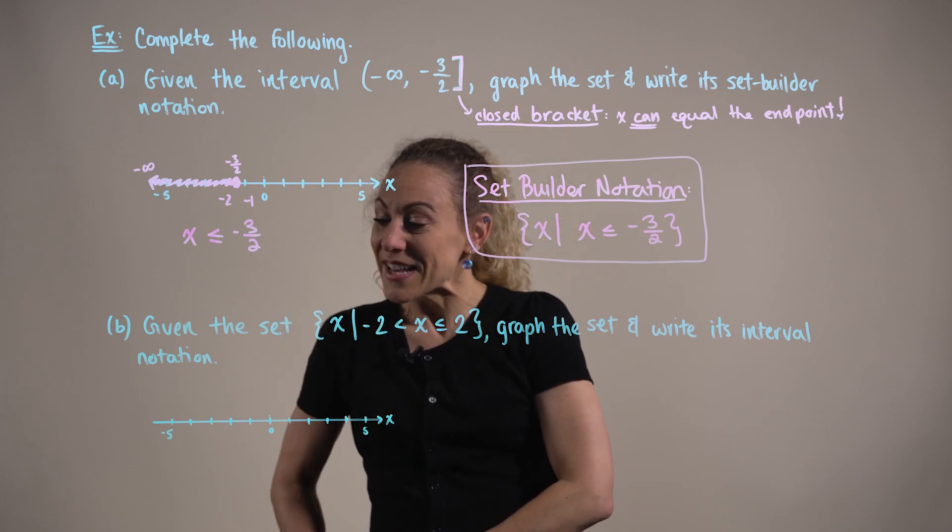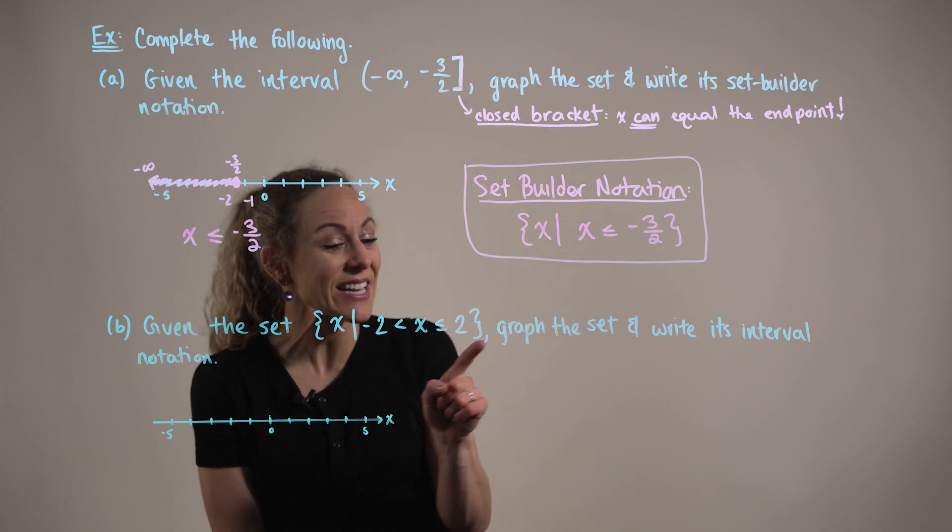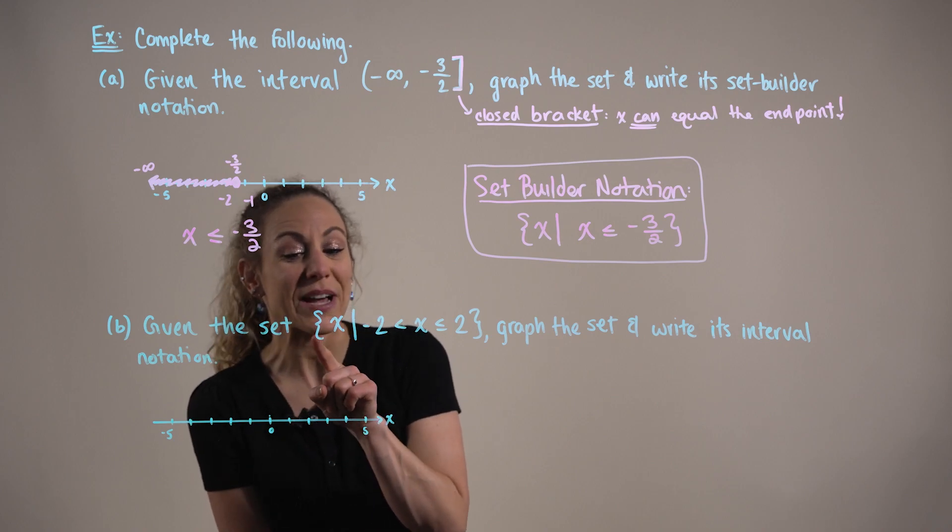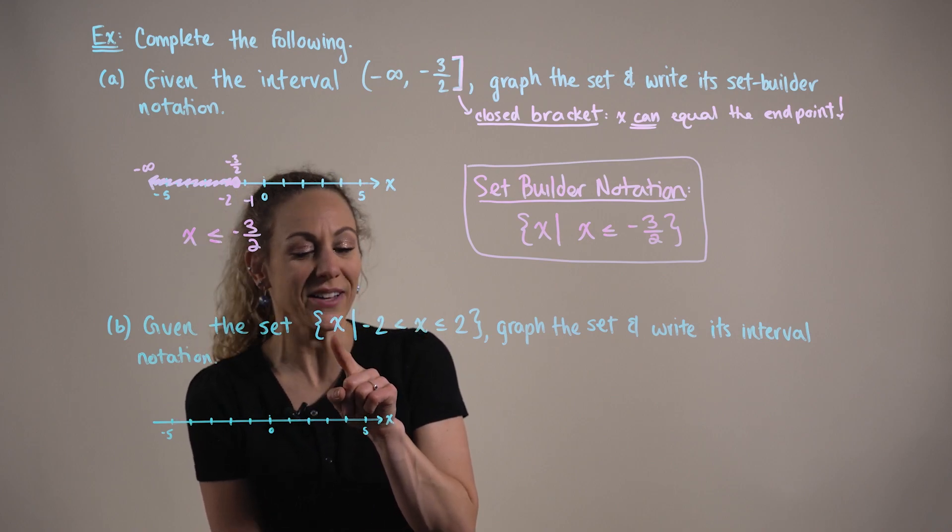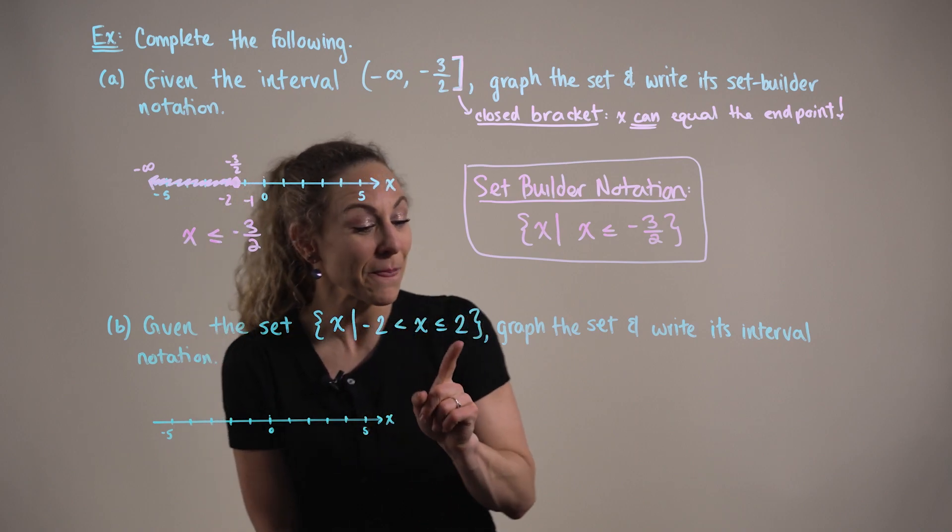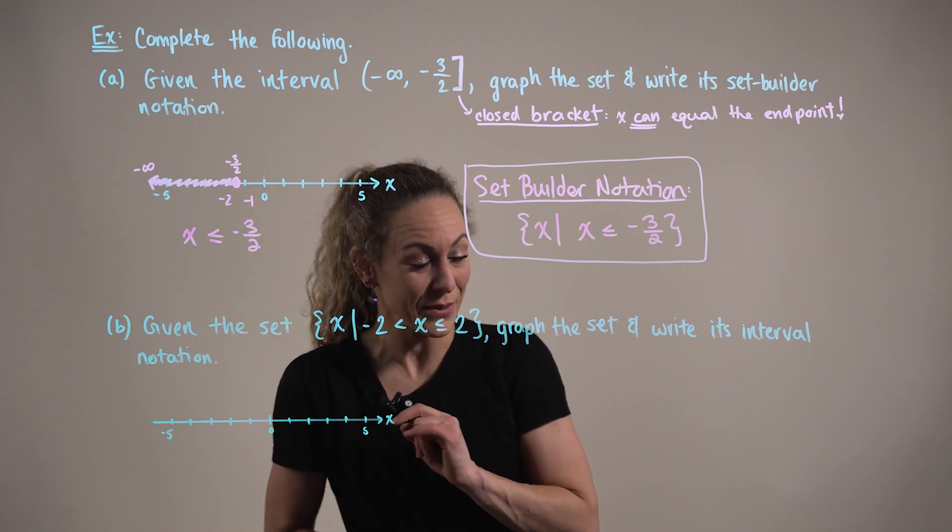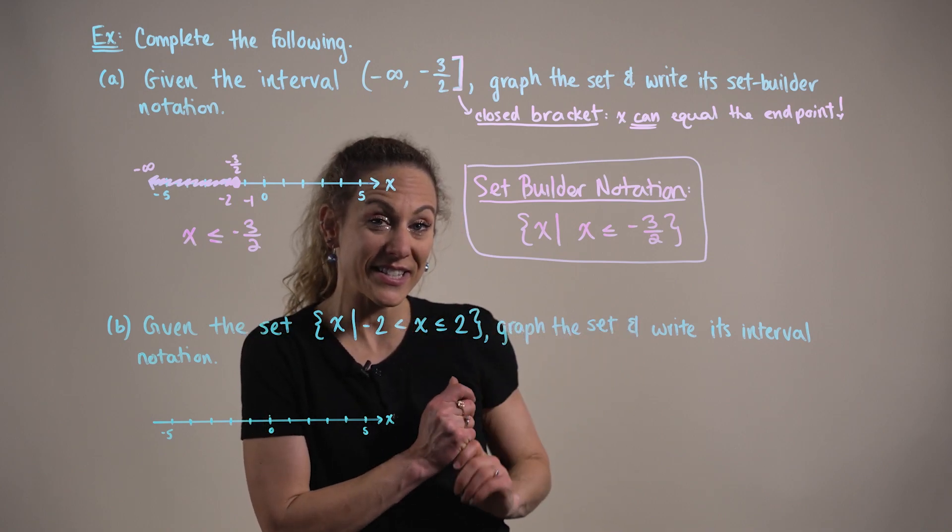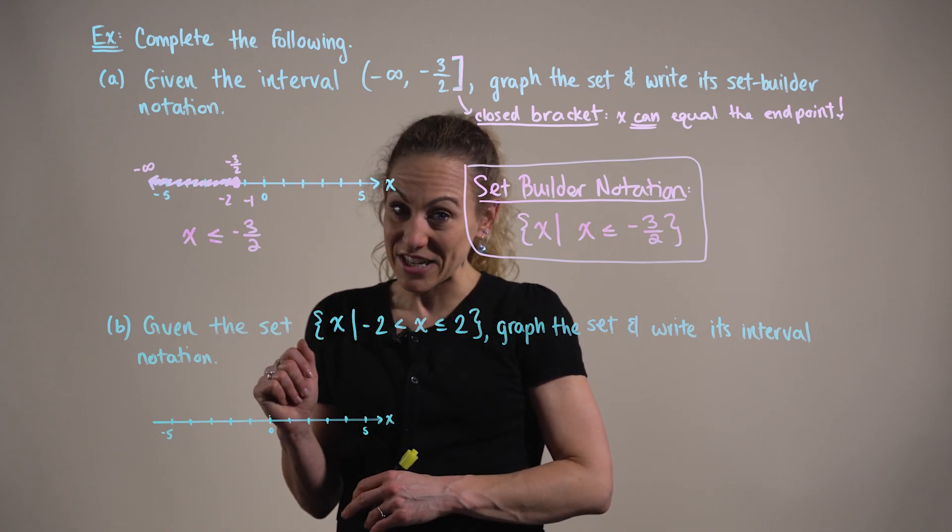In part B, here we are given a set in its set builder notation. You have the set of all real numbers x such that x is strictly greater than negative two but less than or equal to positive two. And we're being asked to graph this set and then to write the set in its interval notation.